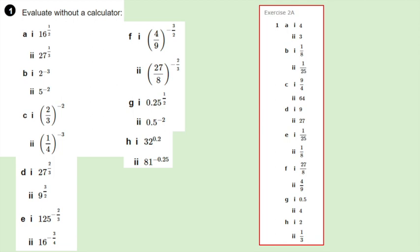Going through each answer. Part A1 is asking us to do the square root of 16, which is 4. Part A2 means exactly the same as the cube root of 27, which is 3. Part B1: 2 to the power of negative 3 — because 2 cubed is 8, the negative index means we take the reciprocal, so we get 1 over 8. Part B2 works the same way: 5 to the power of negative 2 is 1 over 25, because 5 squared is 25.